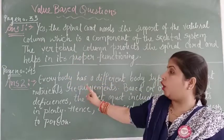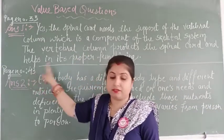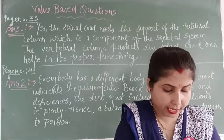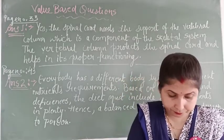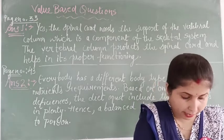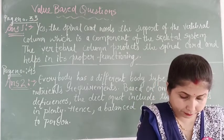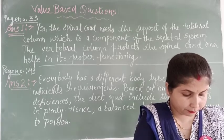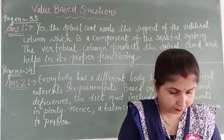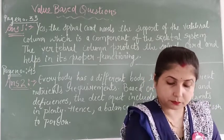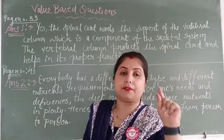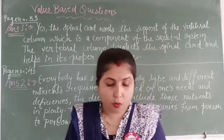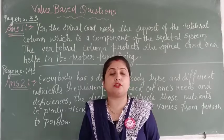Now come to question number 2. Open page number 43, chapter number 4 — our food. The question from page number 43 is: 'Why does a balanced diet vary from person to person?'